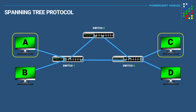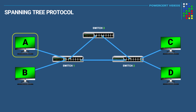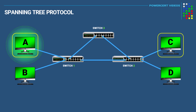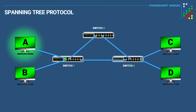But the problem with having a setup like this is that it could create a problem called broadcast loops. As stated before, whenever a computer wants to communicate with another computer, it first has to send a broadcast frame out on the network. So if computer A wants to talk to computer C, computer A will send out a broadcast frame to the switch it's connected to, which is switch 1. And remember, switches will always forward broadcasts to every device connected to them.